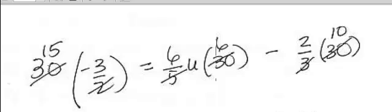Here's the next step. 30 times negative 3 halves. Well, I can do the 30 divided by 2 to get 15. My next step on the left is going to be multiplying that 15 times the negative 3 to get negative 45.